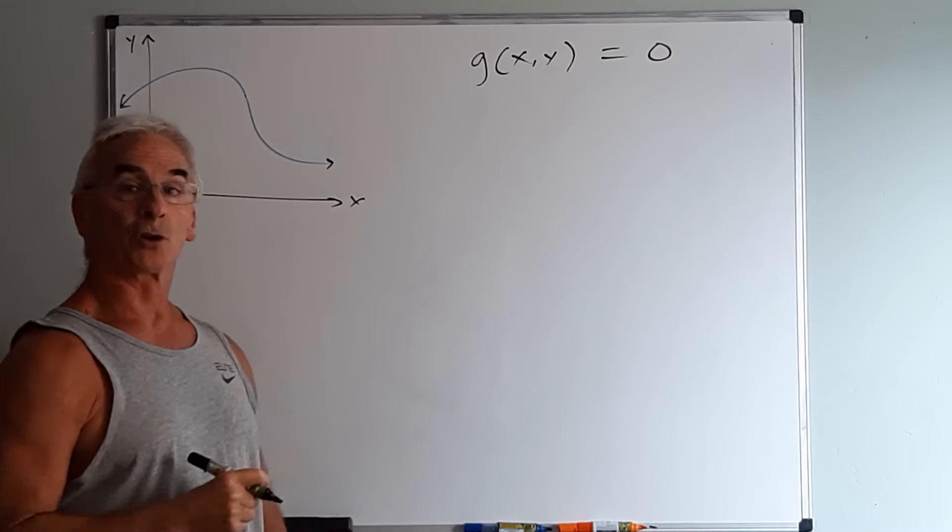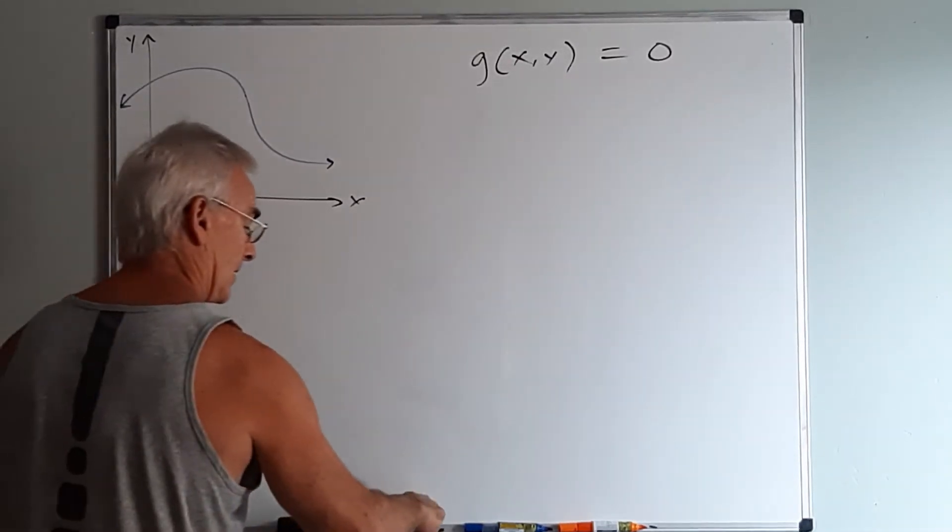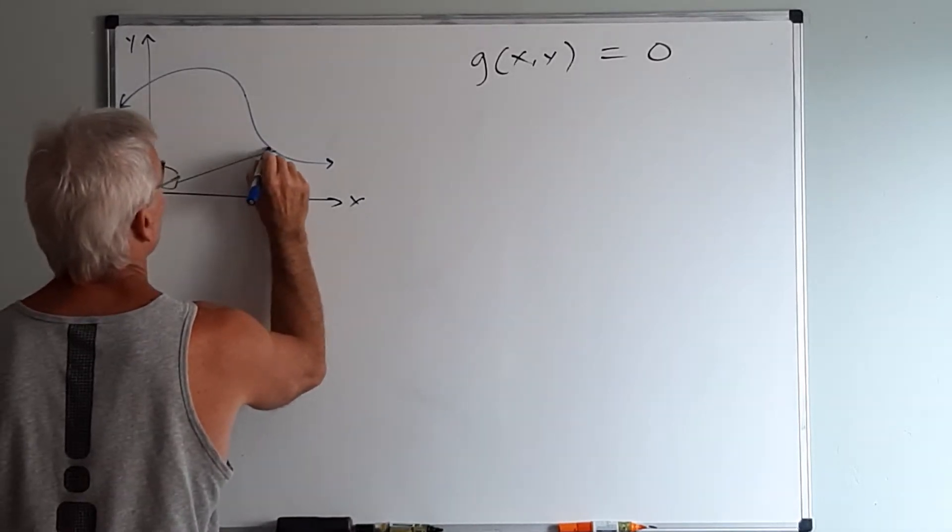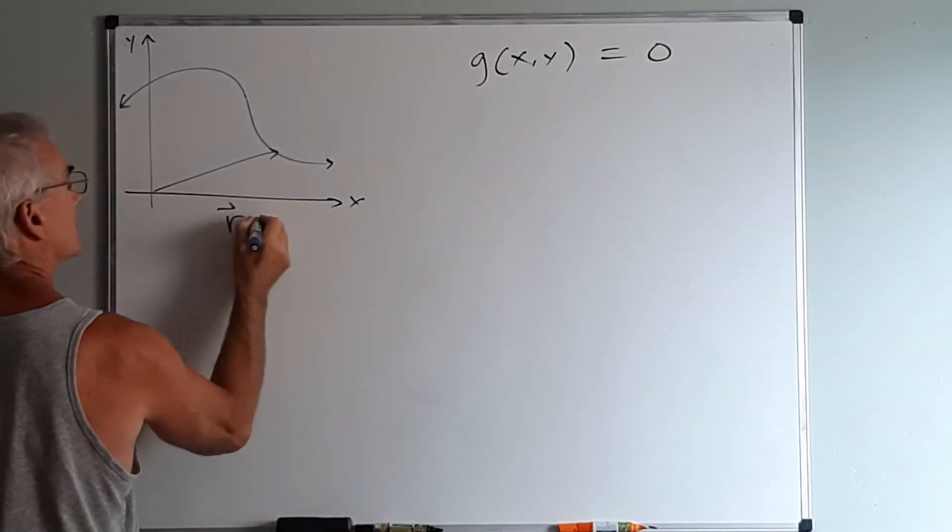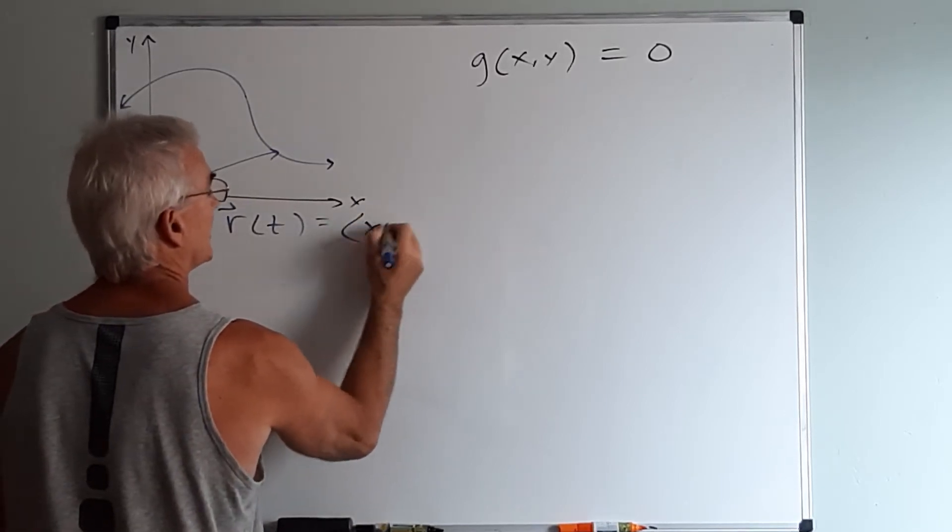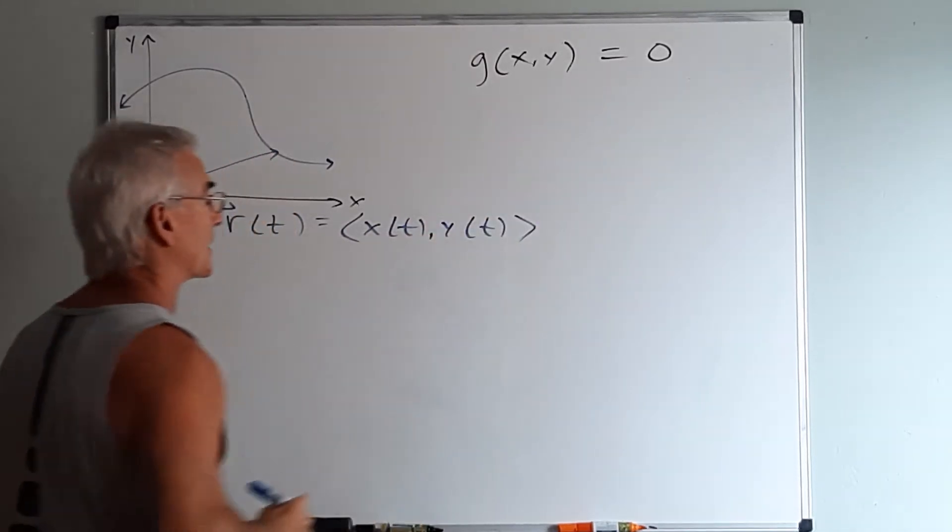So this would become a level curve for a three-dimensional curve. Now if I consider at any point on the curve I can have a position vector, let's call it r of t, and r of t would represent x of t, y of t like before.